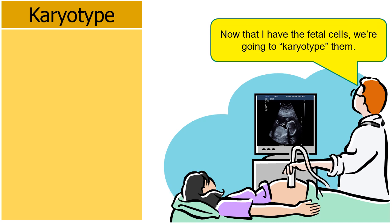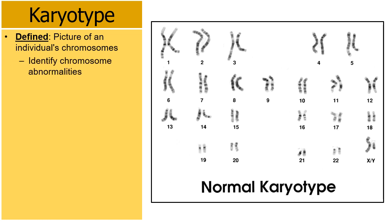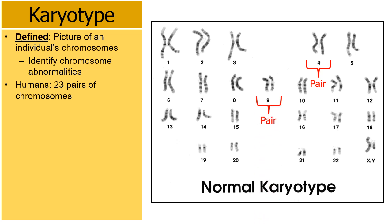Now that we have the fetal cells, we're going to karyotype them. A karyotype is a picture of an individual's chromosomes. Here is a normal karyotype from a person. Karyotypes are useful because they help identify any chromosome abnormalities that might be present. Normally a human should contain 23 pairs of chromosomes. For instance, here's a pair of chromosome number fours, a pair of chromosome nines, and chromosome 13 — each arranged in pairs.